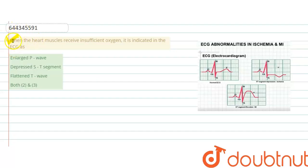Our question says that when the heart muscles receive insufficient oxygen, it is indicated in the ECG. First, let's understand when insufficient oxygen is received in muscles. This condition is known as ischemia, or we can say ischemia heart disease or IHD.